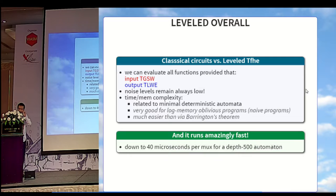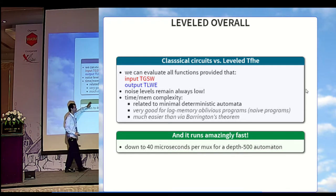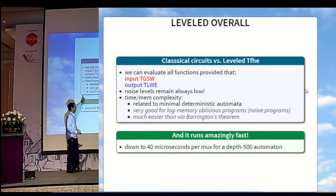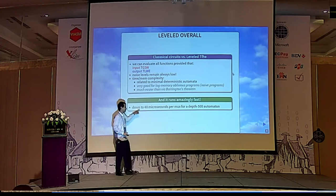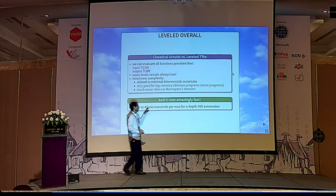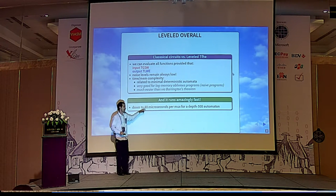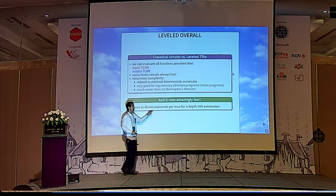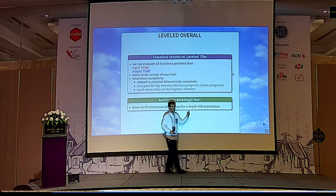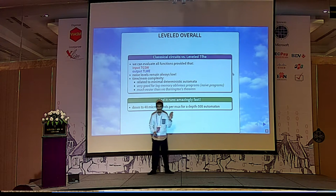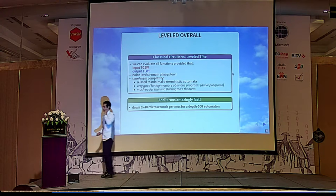Overall, with leveled homomorphic encryption, we can evaluate any function provided that the inputs are GSW ciphertexts and the outputs are LWE ciphertexts. The noise levels will remain always low, and the time-memory complexity will be related to the size of the minimal deterministic automaton. When we combine rings plus automata, one MUX gate can be evaluated in less than 40 microseconds for, for example, the DFA-500 automaton, which corresponds to the LWE decryption — which is really fast.